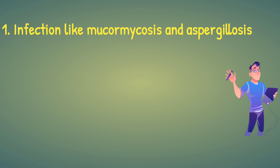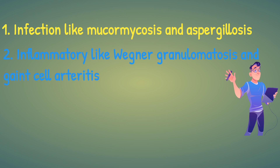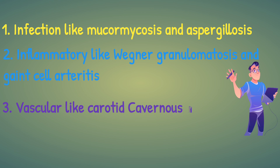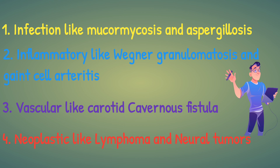Causes: We divide them into infections, such as mucormycosis and aspergillosis, which are invasive aggressive fungal infections. The second cause is inflammatory conditions like Wegener's granulomatosis and giant cell arteritis. The third cause is vascular problems like carotid-cavernous fistula — almost all the above-mentioned nerves travel through the cavernous sinus, so a fistula can lead to such problems. Finally, neoplastic causes like lymphoma and neural tumors can also cause it. So infection, inflammatory, vascular, and neoplastic causes lead to this syndrome.